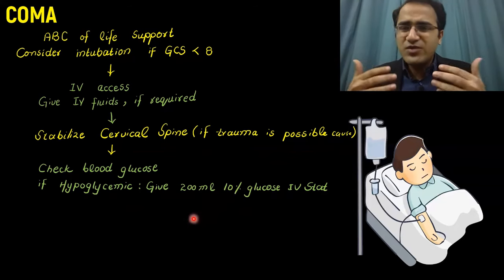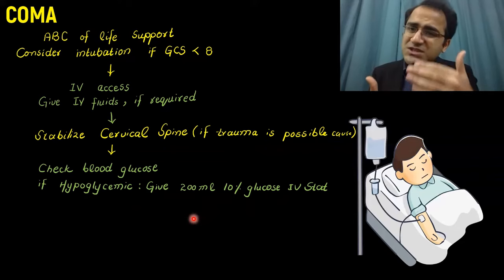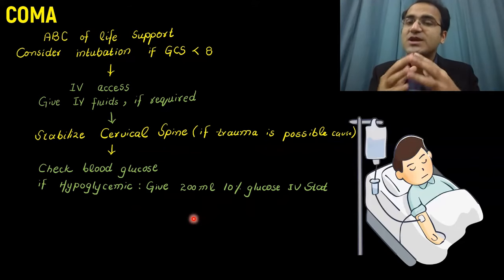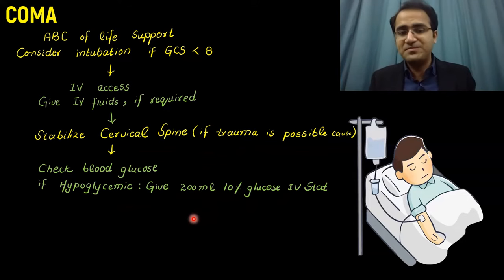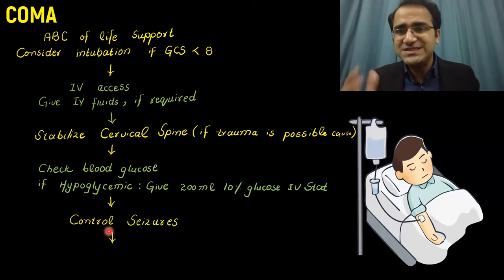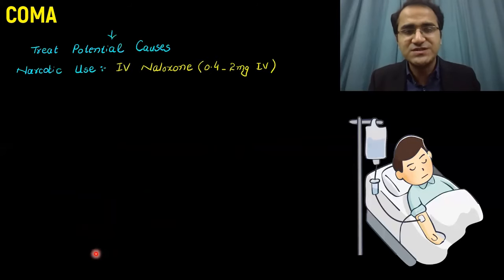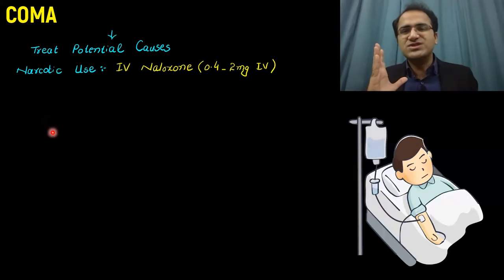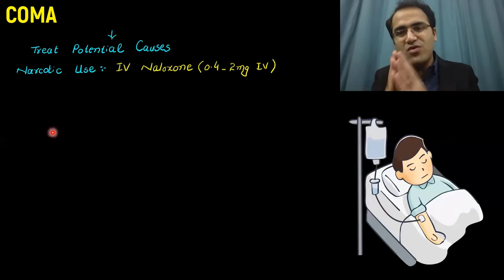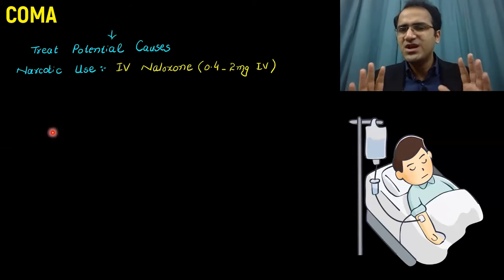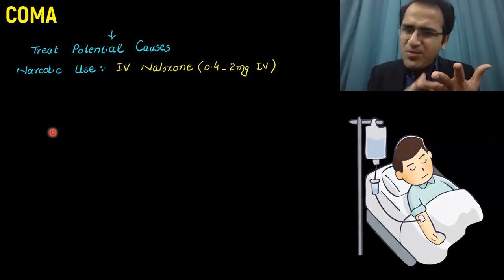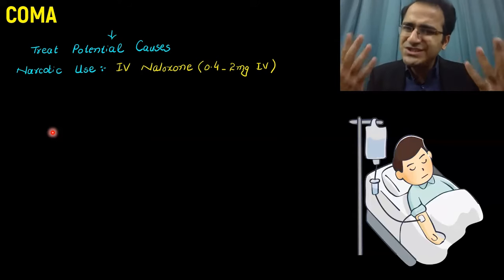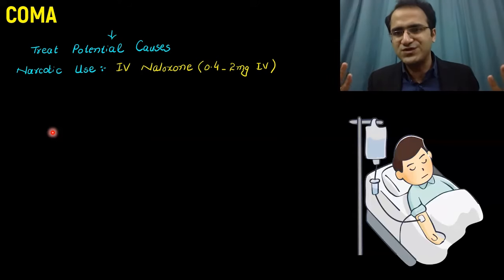What we are trying to do is slowly and gradually rule out all the possible and common causes of coma. If the patient is seizing, you have to control the seizures. Treat the potential causes. The common causes of coma — trauma, hypoglycemia, opiate overdose, benzodiazepine overdose, TCA overdose — must be ruled out and treated first.